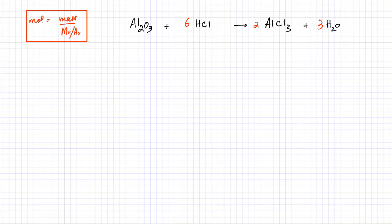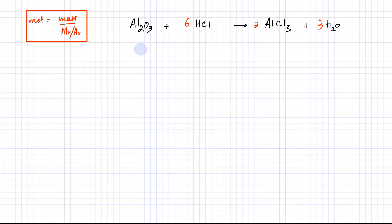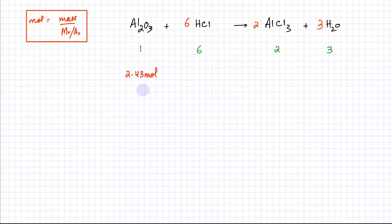Now let's do another example looking at moles, mass, and ratios. We have a balanced chemical equation where aluminium oxide reacts with HCl, producing AlCl₃ and water. The ratios are: one molecule of Al₂O₃ reacts with six molecules of HCl, producing two molecules of AlCl₃ and three molecules of H₂O. Let's say I have 2.43 moles of aluminium oxide and I want to figure out the moles of HCl that will react with it.